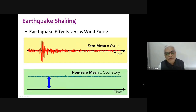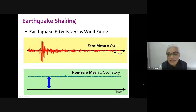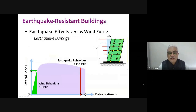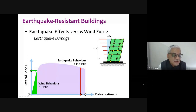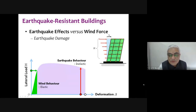Unlike wind, which is a non-zero mean force, earthquake shaking is a cyclic activity and hence much more severe, because in a fraction of a second the building has to reverse back and forth. Under wind forces, a structure should not undergo any damage, but under earthquake forces we have a choice — we can permit some inelastic actions. That is the big difference between wind design and earthquake resistant design.